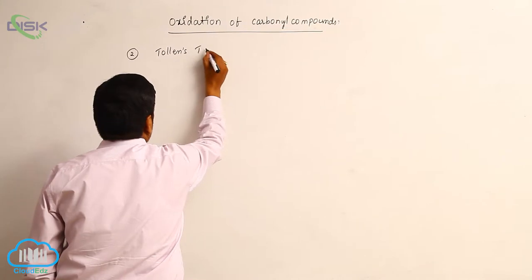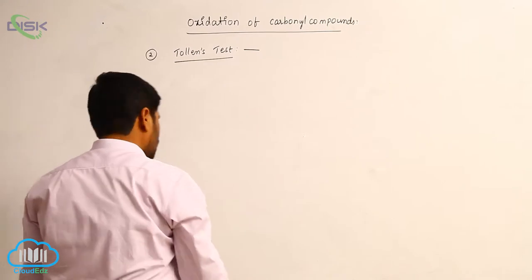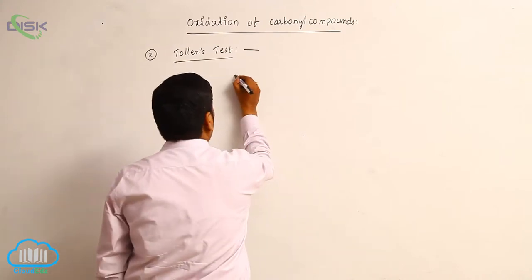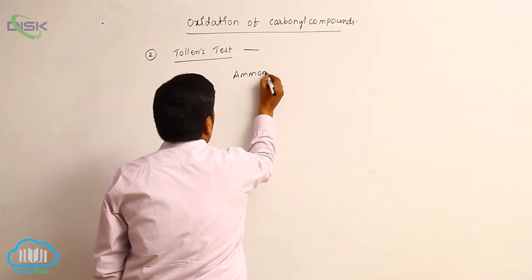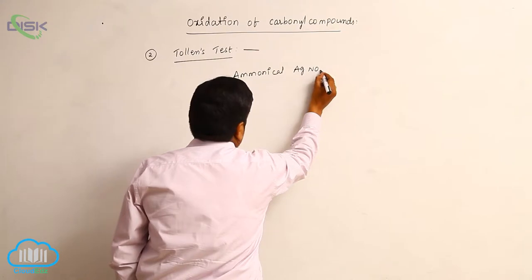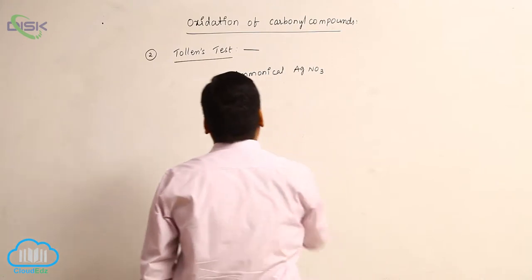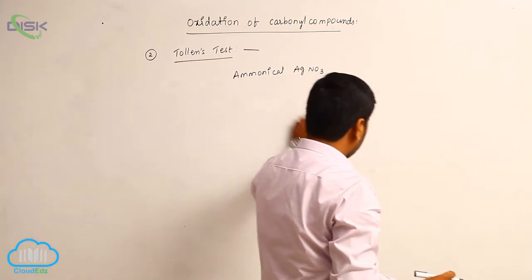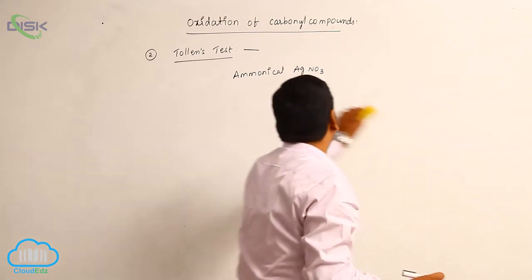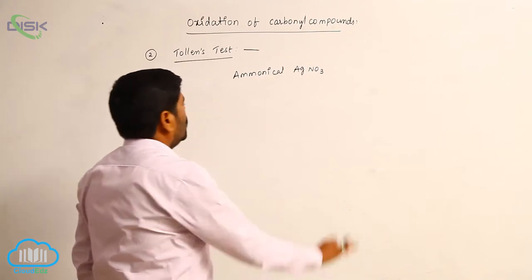The second test is the Tollens test. Ammonical silver nitrate is commonly known as Tollens reagent.